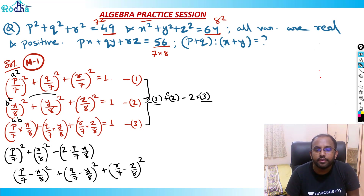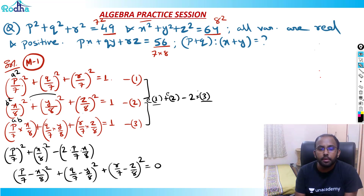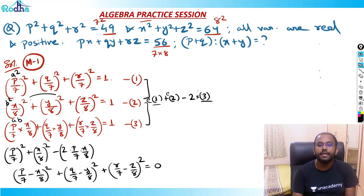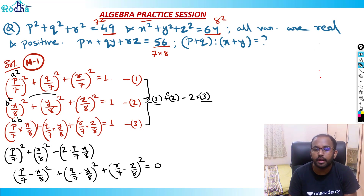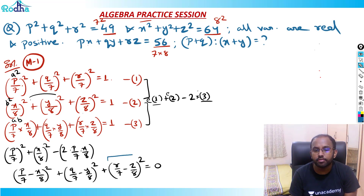This sum should be equal to 0. Since the sum of three perfect squares is 0, all three must individually be 0, because a perfect square can never be negative.